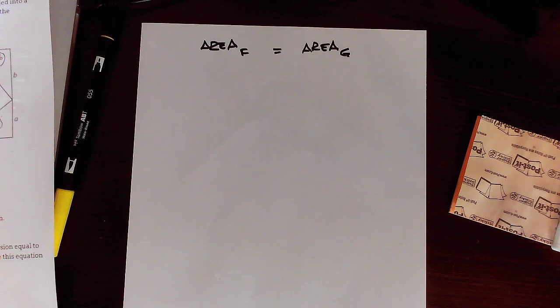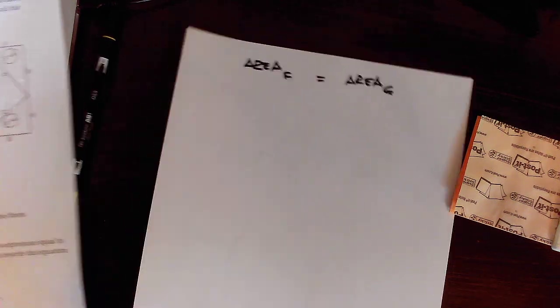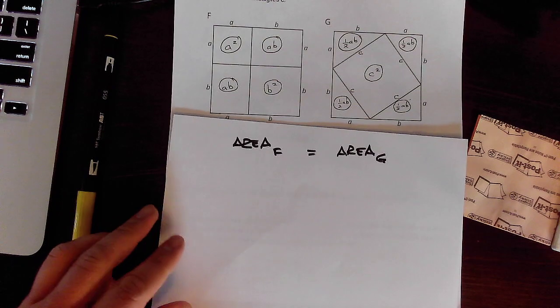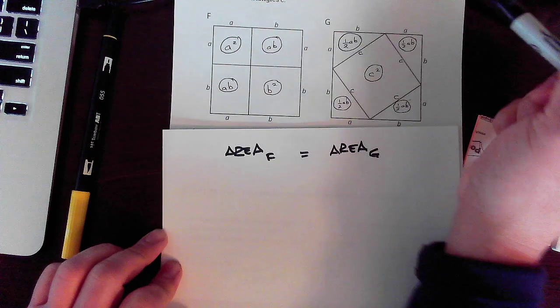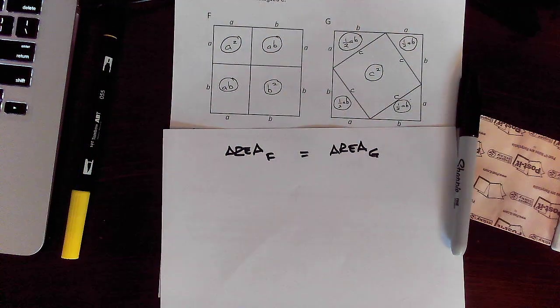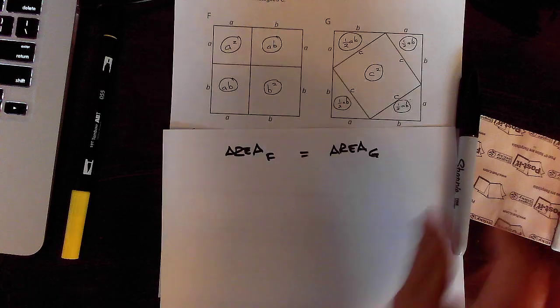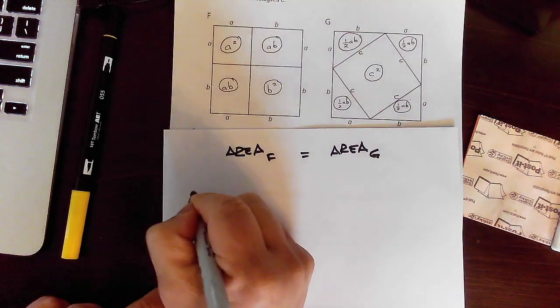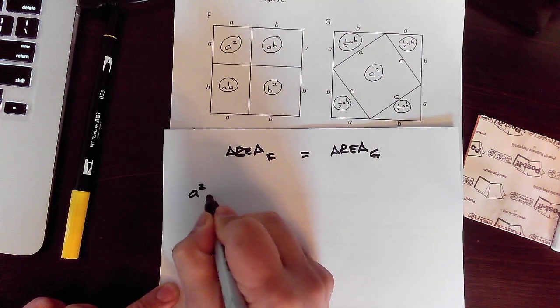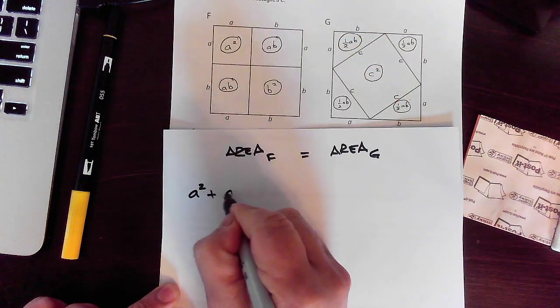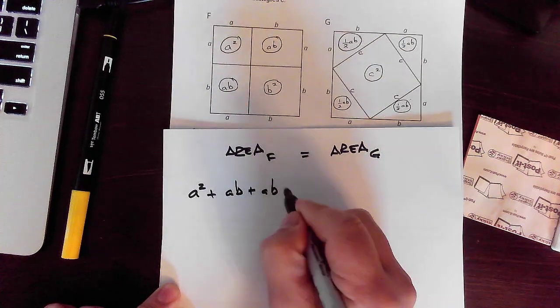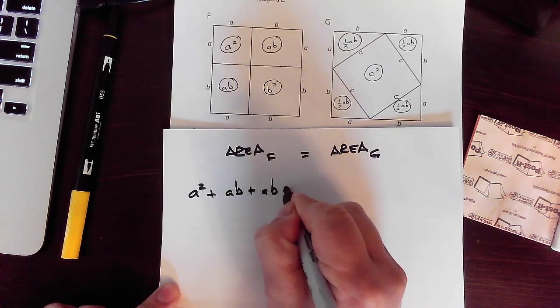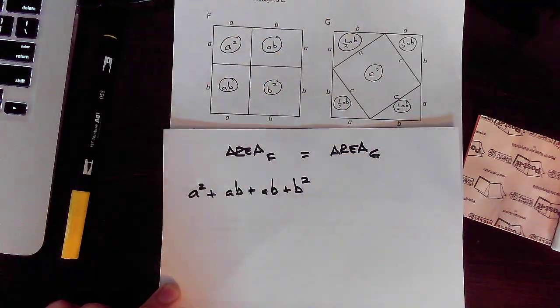The directions were, add up the area of the four regions of F. So what they're saying is, add up everything that I wrote in circles there, because those are all areas. So I'm going to have A squared plus AB. Oh man. I could take a shortcut and just write 2AB, but I'll do that in the next line. Plus B squared.